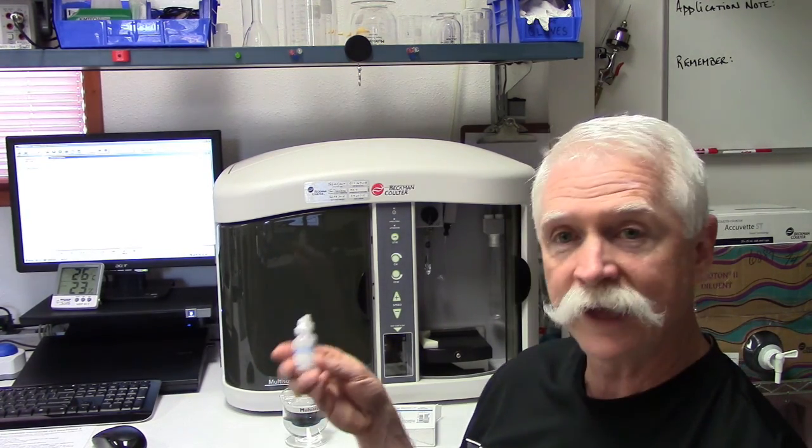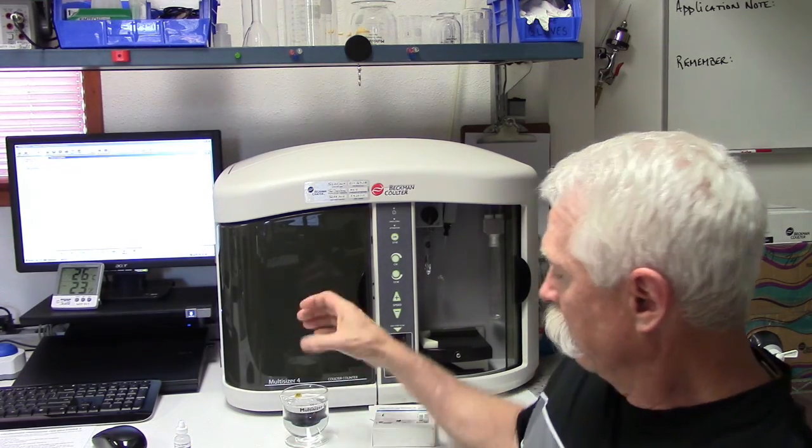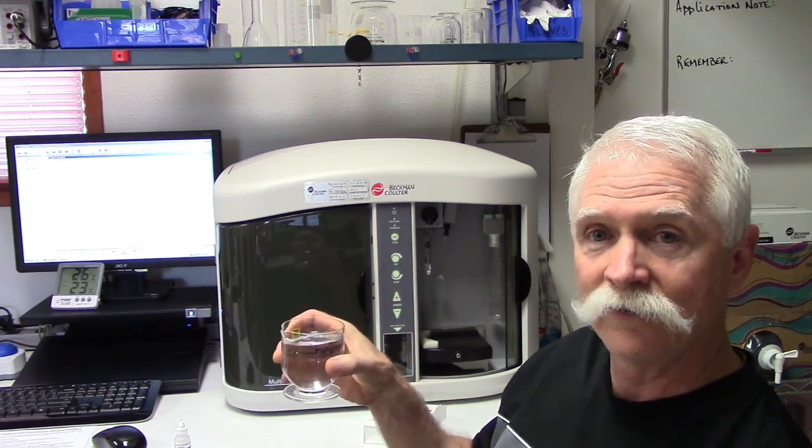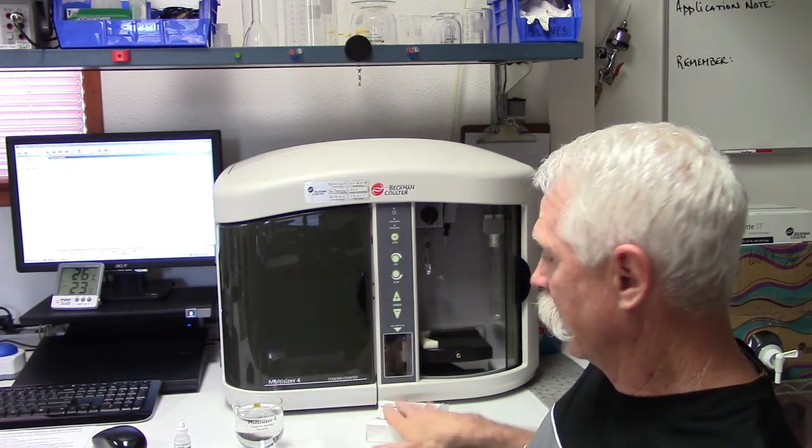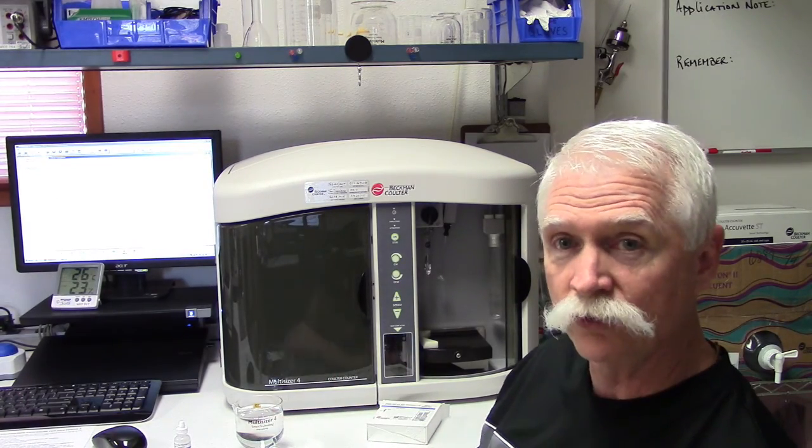You're going to need your L10, which is your 10 micron control standard. You're going to need about 200 milliliters of clean Isoton 2, just like we specified in the SOM. Of course then you've got your assay sheet from your control standard.